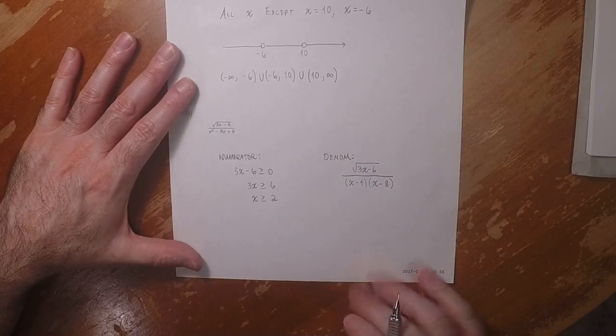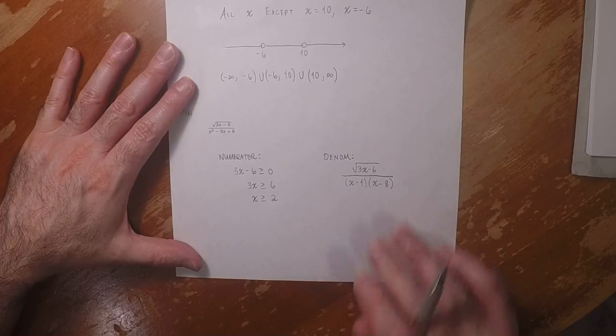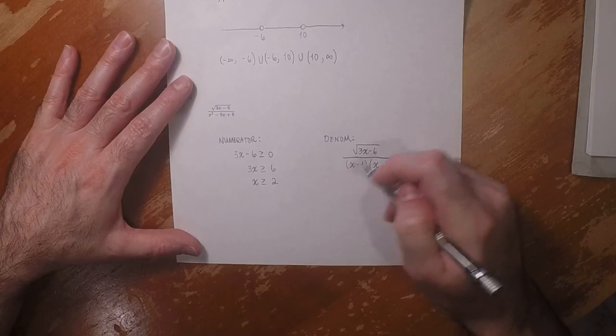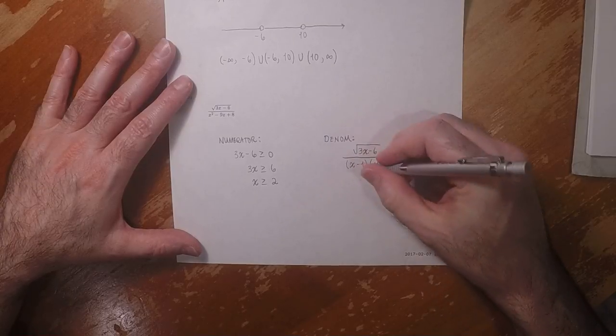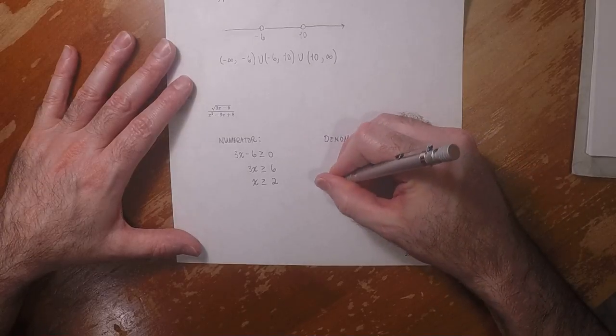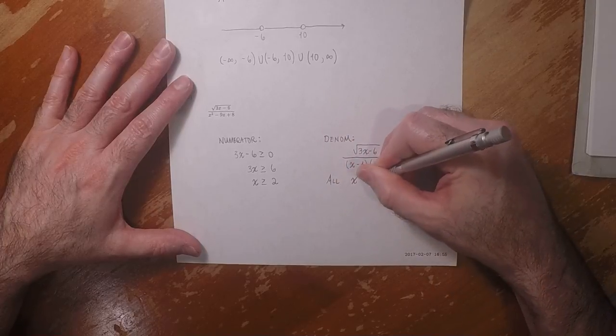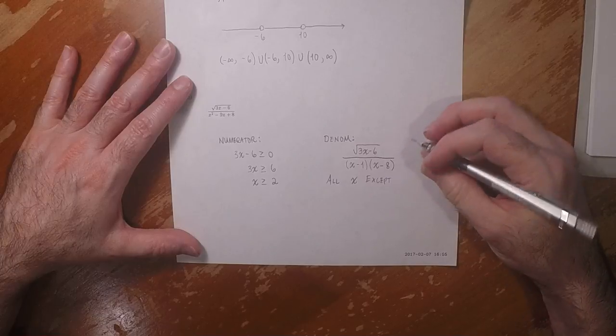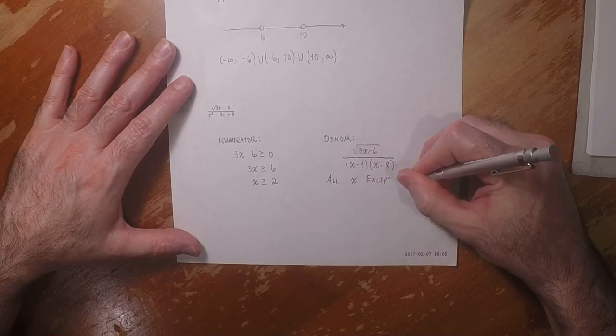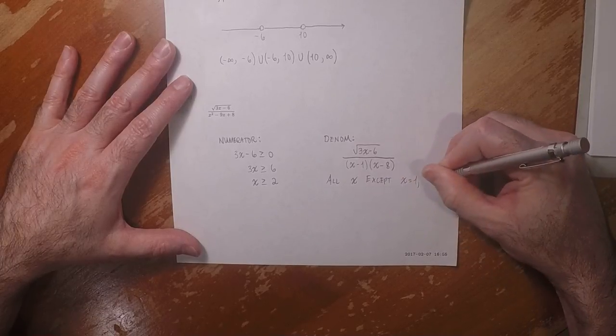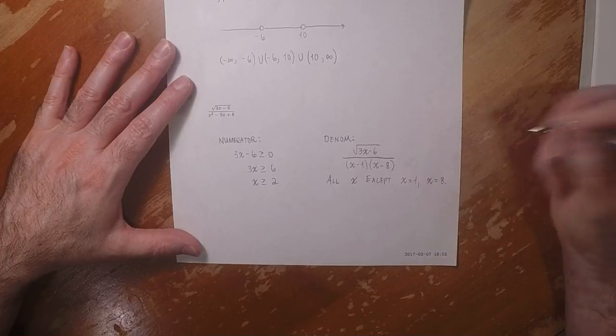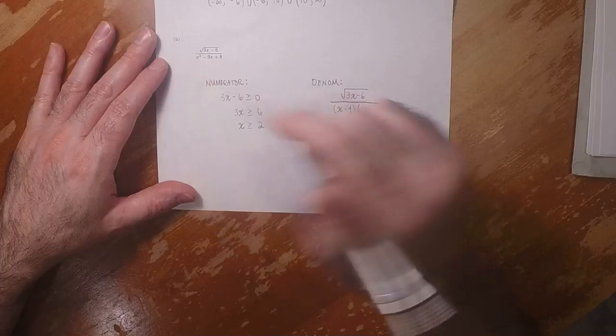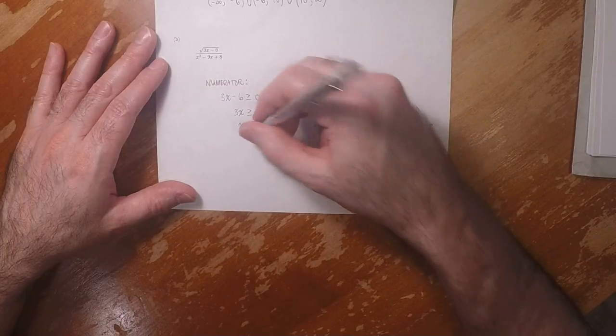So according to that, the restriction on the denominator is any x except 1 or 8. All x except x is 1 and x is 8. Then in order to evaluate this expression, we need both of these to be true.